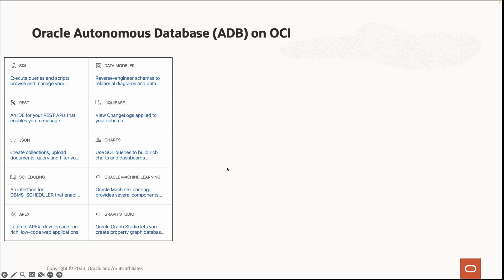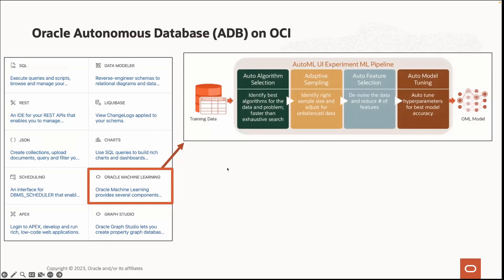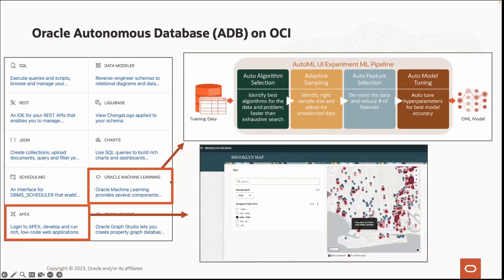Out of the box, customers get a number of integrated services with the Autonomous Database. The OML platform gives users tremendous modeling power in an automated fashion, including automated machine learning steps like algorithm selection, sampling, testing, identifying strong features, and hyperparameter tuning — choosing the right model settings to optimize for accuracy. The second service is the development of low-code enterprise apps in APEX for visualization and interactivity, fully integrated into the Autonomous Database stack.